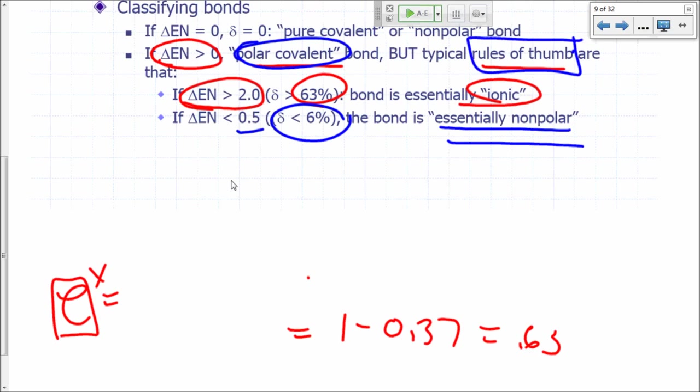Now keep in mind, these are just rules of thumb and they vary depending on textbooks. Some textbooks would have 1.8 as a threshold between ionic and covalent. So this is just rough rules that you can use to gauge whether you're looking at an ionic bond or a nonpolar bond or a polar bond.